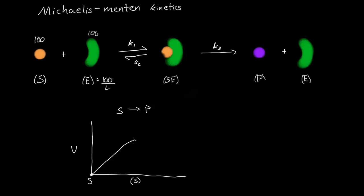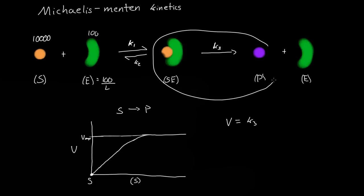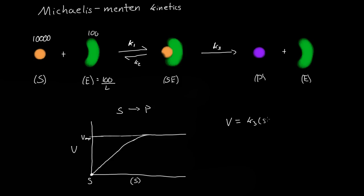There will come a point where even though we increase the concentration of substrates — say to 10,000 — the rate is limited by the number of enzymes, so we get some maximum velocity, Vmax. Now let's find the rate of product generated. That's equal to K3 times the concentration of the substrate-enzyme complex SE, since P is only generated by that reaction.